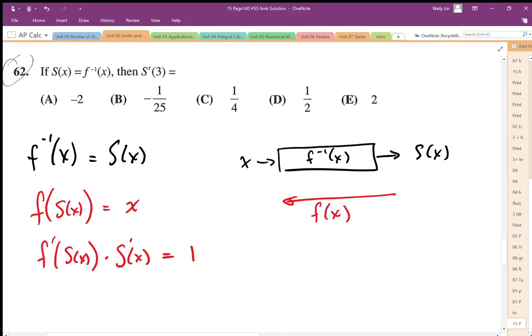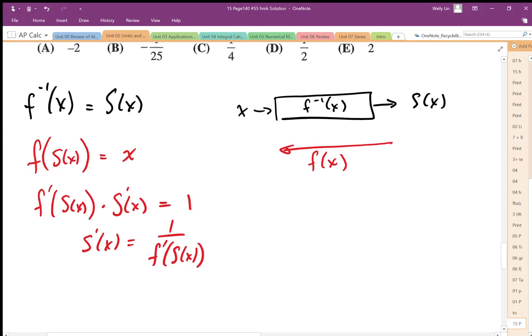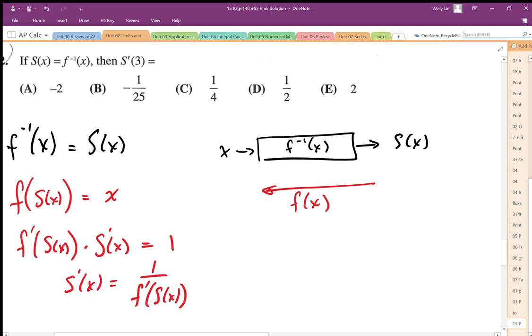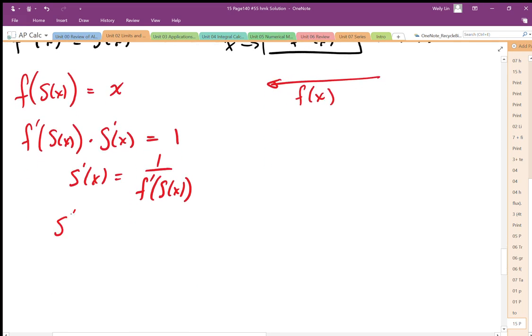This is going to allow me then to solve for s prime. There's my s prime expression: s prime of x is equal to 1 over f prime of s of x. So I'm being asked to find the derivative at x equals 3. So I'm trying to find s prime at 3, that means I need to plug in 1 over f prime of s of 3.